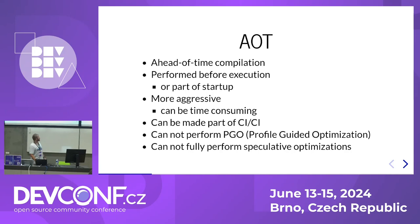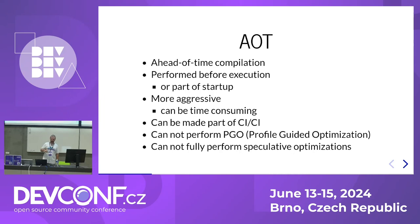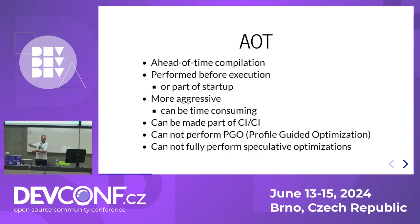What ahead-of-time compilers are generally not able to do fully is PGO — profile-guided optimizations. Sometimes it's possible but usually not, and the solutions I'll show don't do it. Profile-guided optimizations look at how the code is actually used, because there are differences between the static code as you see it in your IDE and the real run of the code.